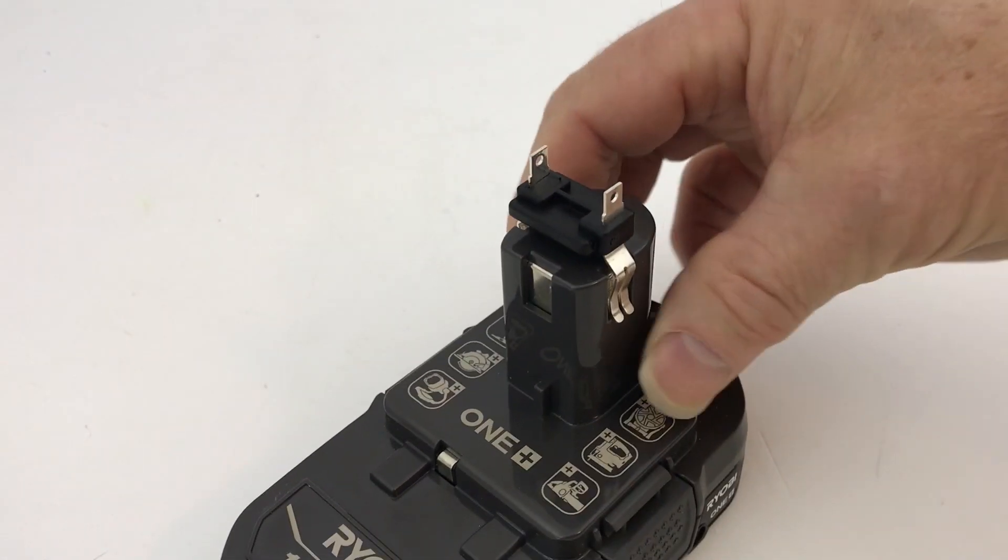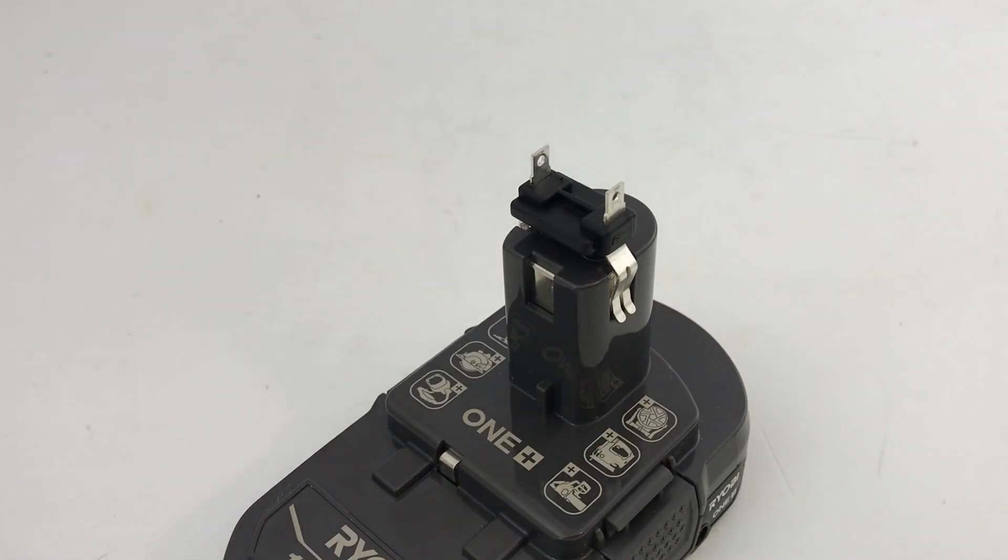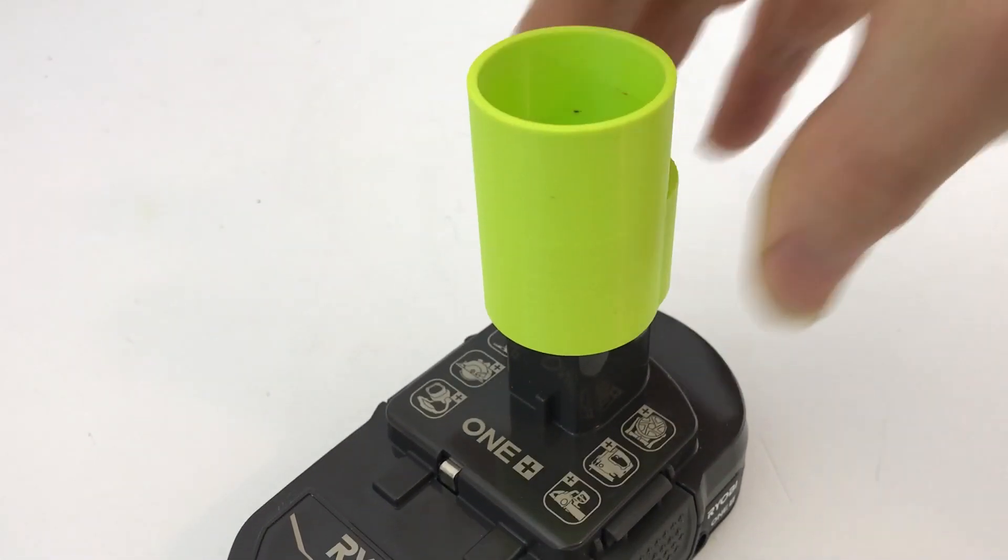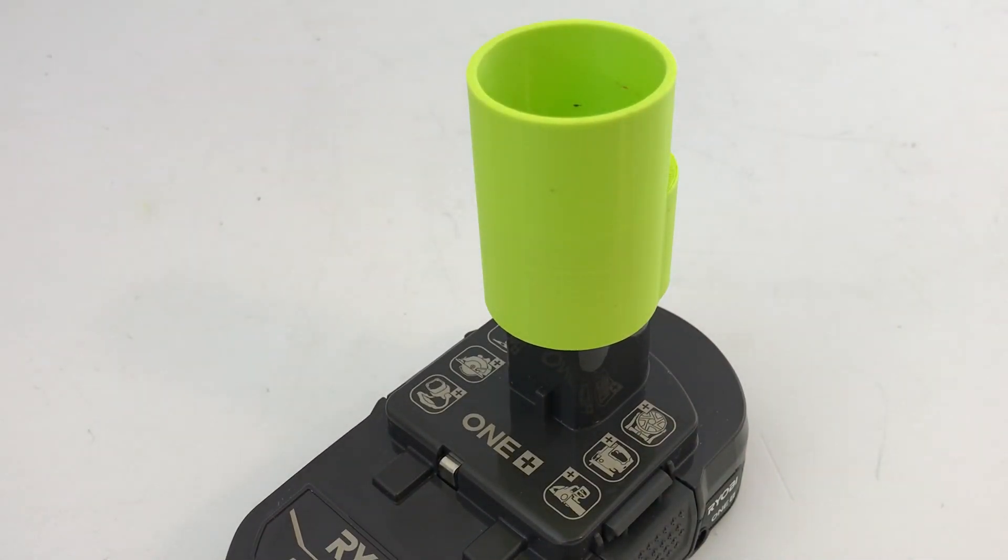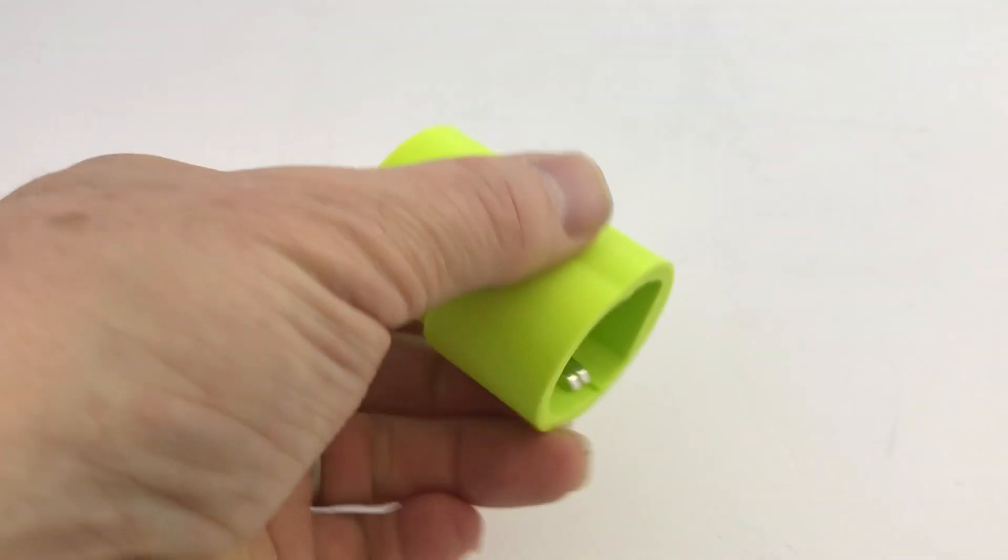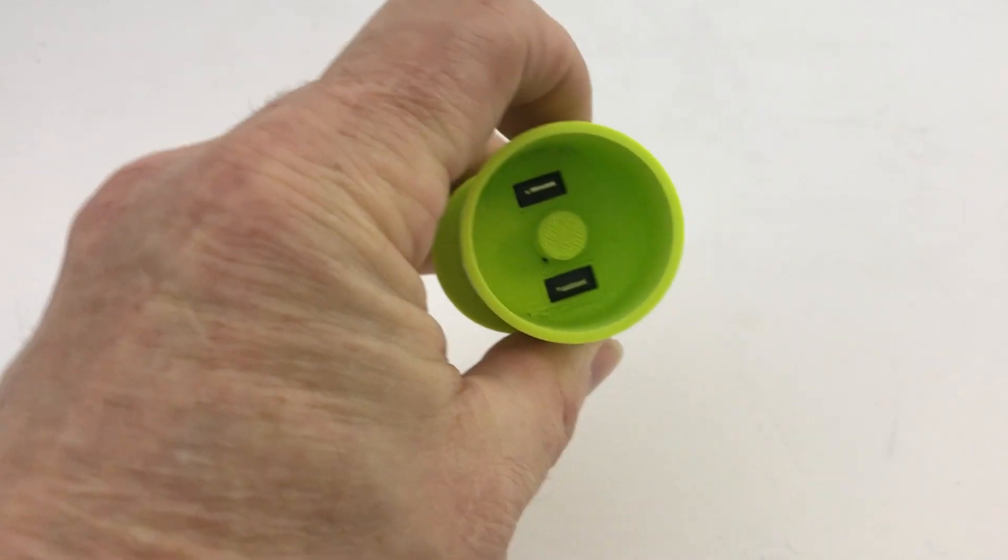The easiest way to get these things started is to just put the adapter that I printed right over the part and push down. That gets it started and then you can push it in the rest of the way with your thumb. You can see that I've pushed it in and the terminals come out of the top.